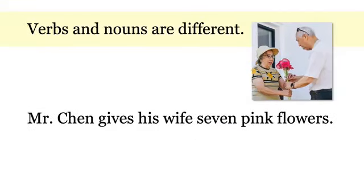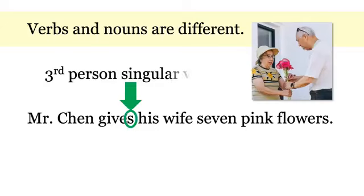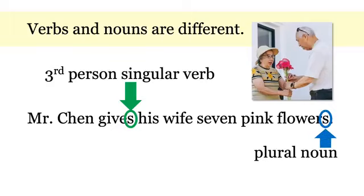Verbs and nouns are different. They have different rules. Let's take a look. In this sentence, Mr. Chen gives his wife seven pink flowers. Look at this S on gives. This S is for third person singular verb. But look over here, we have an S on flowers. This S is for a plural noun. We have seven pink flowers. The uses are different, but some of the spelling rules look the same.